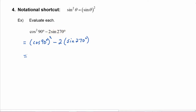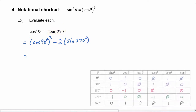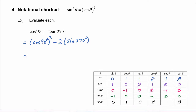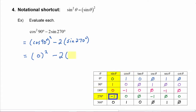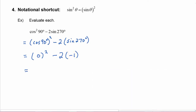Now if we look at our summary chart for the trig values of the quadrantal angles, we can see that the cosine of 90 degrees is zero — square it — and the sine of 270 degrees is negative one. So this turns into zero plus two, which is equal to two.